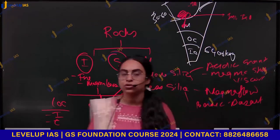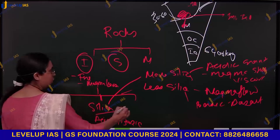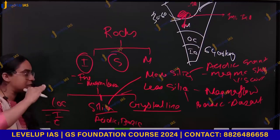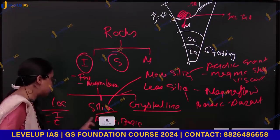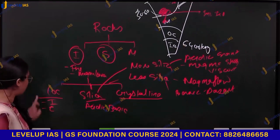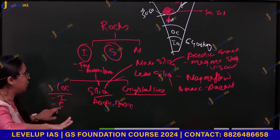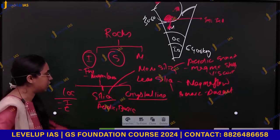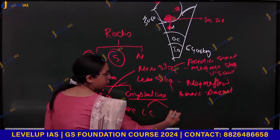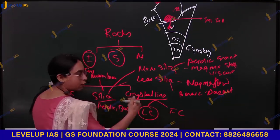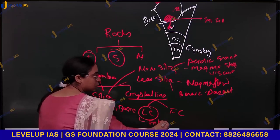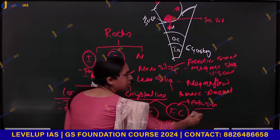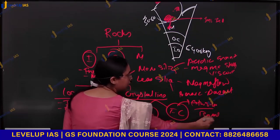You can also classify igneous rocks on the basis of crystal structure — fine crystal or large crystal. Something cooling inside the crust takes more time to cool, allowing it to crystallize in a better manner, forming large crystals. Large crystals are generally found in intrusive rocks; fine crystals are generally seen in extrusive rocks. For example, basalt has fine crystals and granite has large crystals.